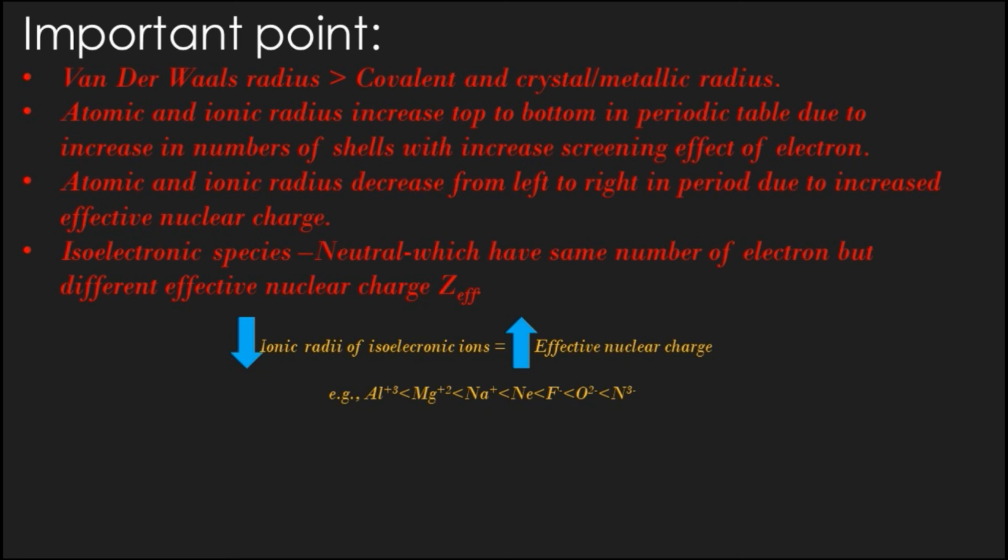Fourth, isoelectronic species are neutral or ionic species which have the same number of electrons but different nuclear charges. The ionic radius of isoelectronic ions decreases with the increase in magnitude of nuclear charge.